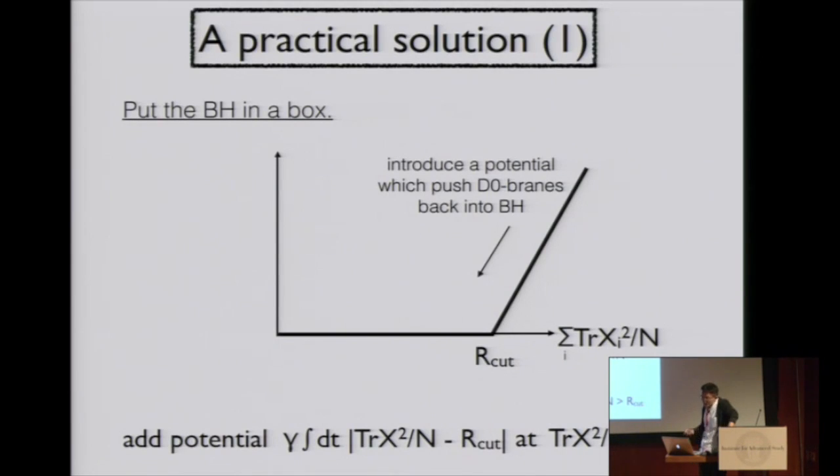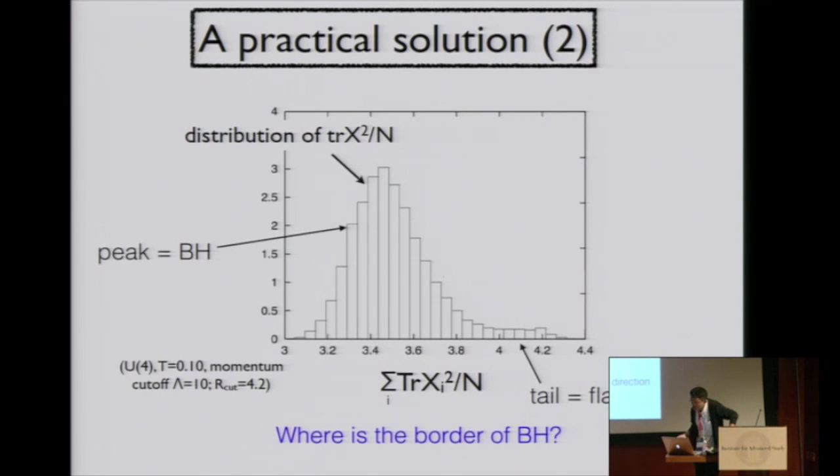Practical solution is, first we introduce some potential term which pushes back eigenvalues into black hole when it tries to run away from black hole. We take this cutoff value slightly bigger than black hole. Then, distribution of Tr(X_i²)/N, which characterizes the size of the eigenvalues, becomes like this. Here we see clear peak, which should correspond to black hole.